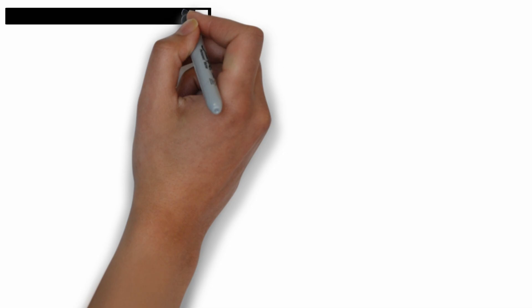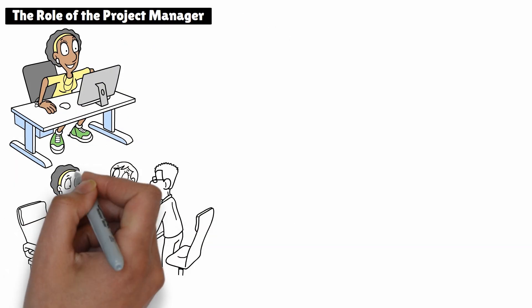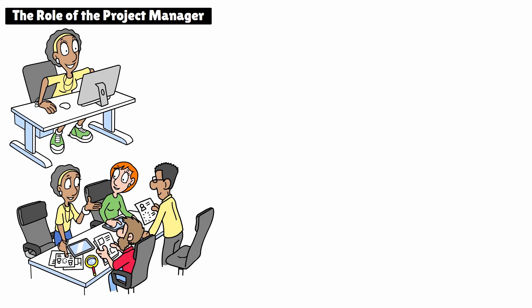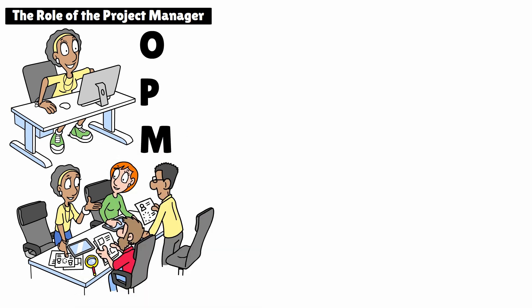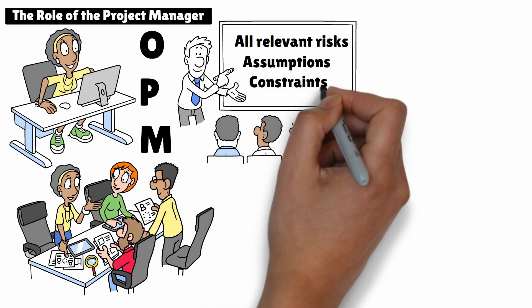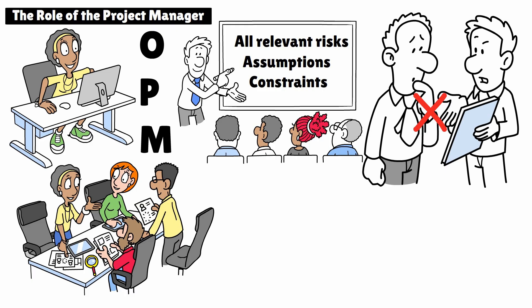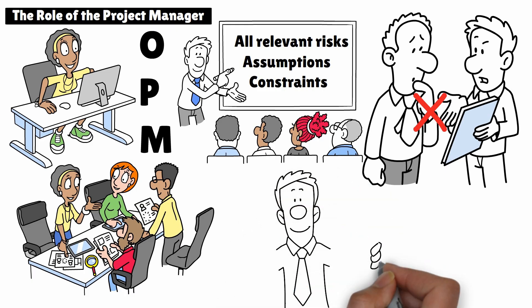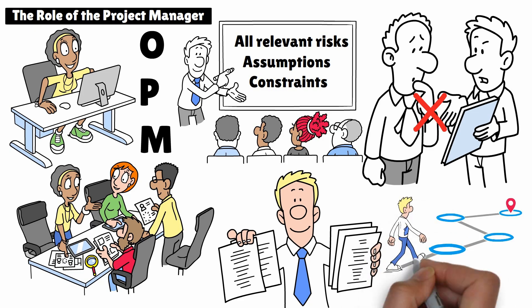As a project manager, your role in this process is critical. You're responsible for guiding the team in providing realistic estimates for all three scenarios — optimistic, pessimistic, and most likely. You also need to ensure that team members consider all relevant risks, assumptions, and constraints. This prevents the team from creating overly optimistic or unrealistic estimates, which can lead to project delays or budget overruns. Finally, you'll use these estimates to create a more reliable project schedule and budget, helping ensure that your project stays on track.